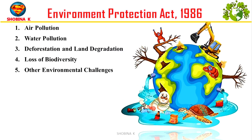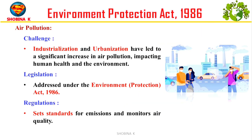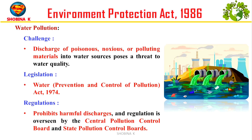EPA serves as a comprehensive framework for addressing various environmental challenges in India, including air pollution, water pollution, deforestation and land degradation, loss of biodiversity, and other environmental challenges. Air pollution is a big problem caused by factories and growing cities. It hurts people and the environment. To deal with this, the Environment Protection Act sets standards for emissions, aiming to limit harmful pollutants released into the air.